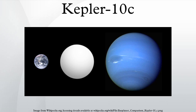Kepler-10c orbits its host star every 45 days at a quarter of the average distance between the Sun and Earth. It has a radius more than double that of Earth, but a higher density, suggesting a mainly rocky composition with around 5–20 percent ices by mass. For comparison, the Earth's oceans represent only 0.02 percent of our planet's mass.